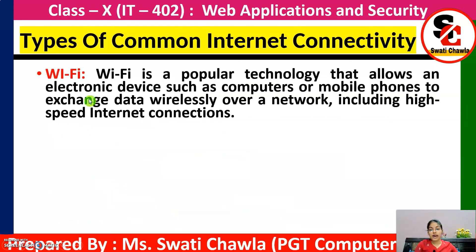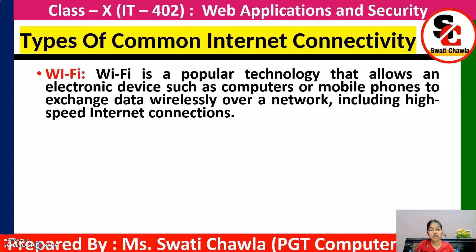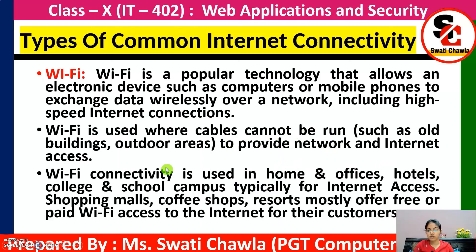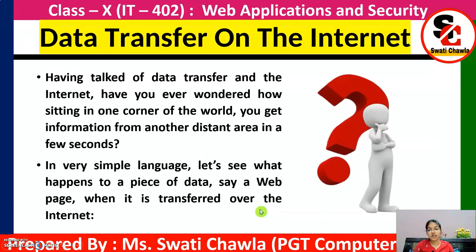WiMAX is a long-range system covering many kilometers, typically used where DSL or cable internet access cannot be used — such as remote locations where cable connections aren't feasible. Next is Wi-Fi — Wireless Fidelity. It is a popular technology that allows electronic devices like computers and mobile phones to exchange data wirelessly over a network at fast speeds. Wi-Fi is used where cables cannot be run, to provide network and internet access.